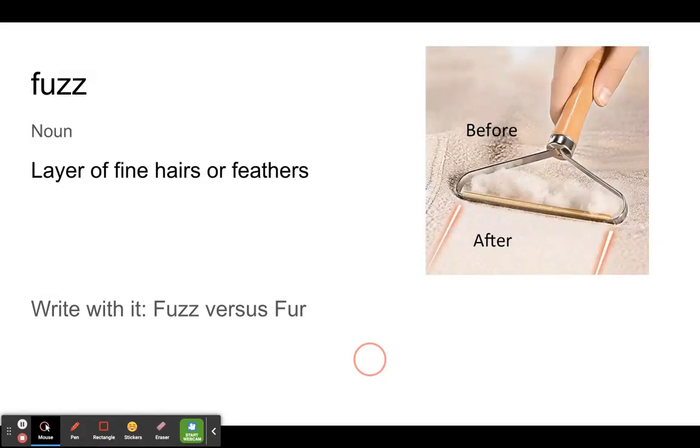Fuzz. It's a noun, a layer of fine hair or feathers. You can see this clothing roller here is rolling across a fuzzy jacket and it's taking off a layer of fuzz that had accumulated on the jacket. If you're writing with it, you have these two similar words. There's fuzz, there's fur, fuzzy or furry.